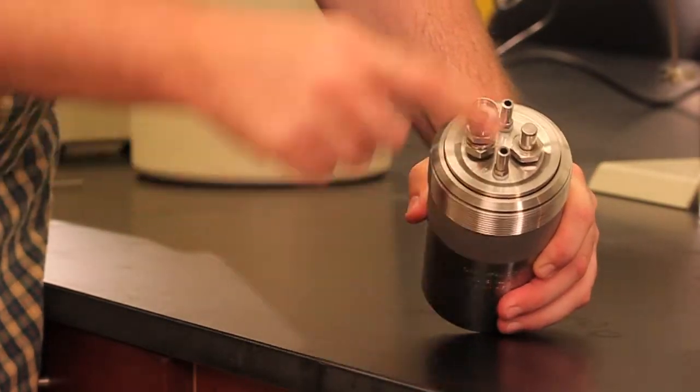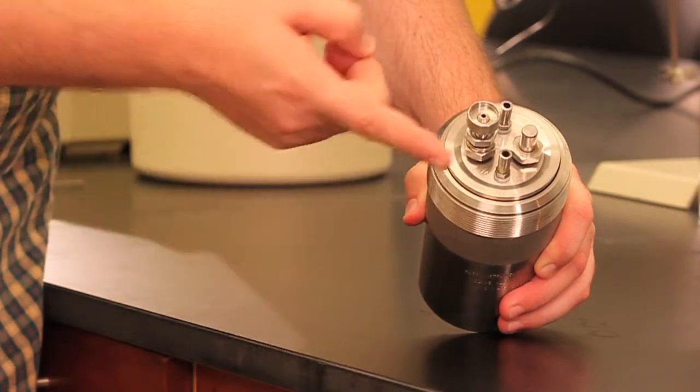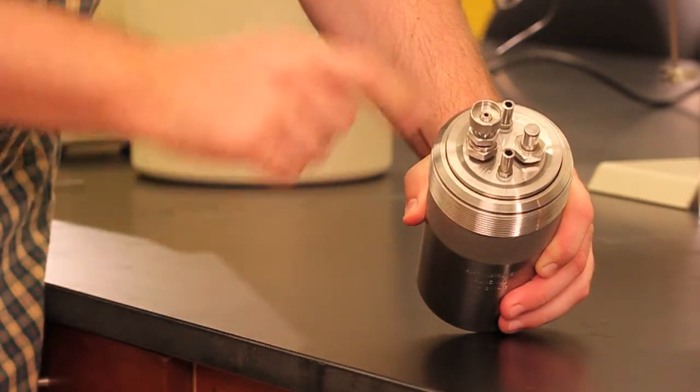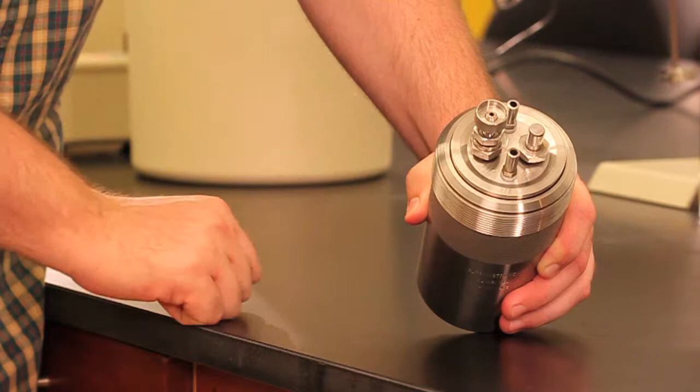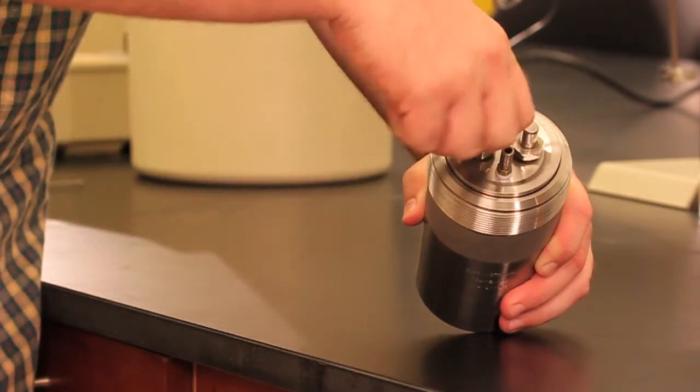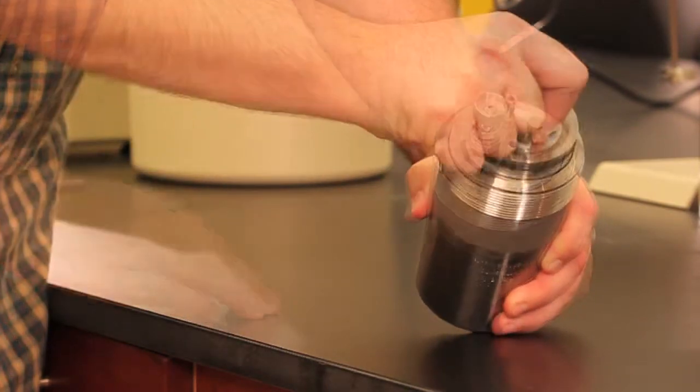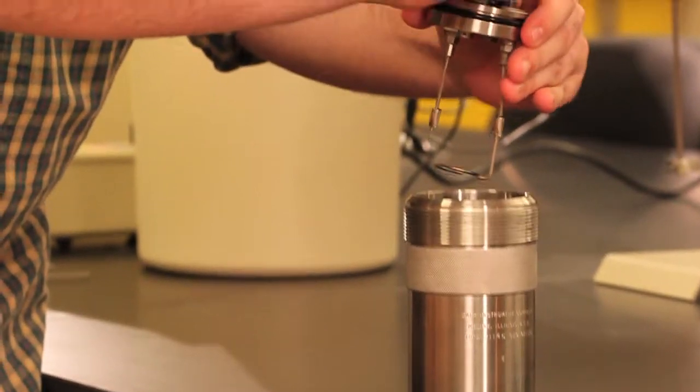On the top of the bomb, there is a gas connector, a venting valve, and two electrical feed-throughs. Loosen the valve counter-clockwise to vent the bomb to atmosphere. With the vent open, the top can be pulled up to remove from the body.